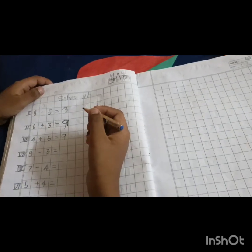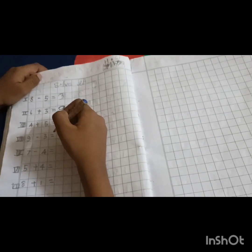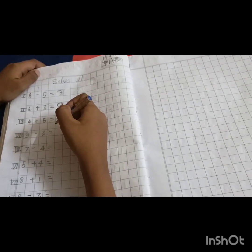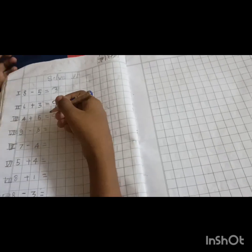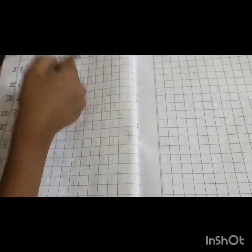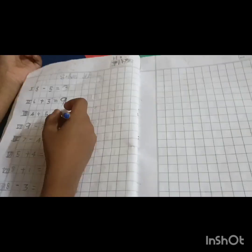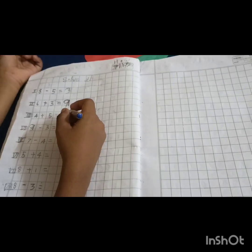Then the next one is subtraction. 9 minus 3. 9 in the mind. 9 in the mind, 3 in hands. Go, go, go, go. Talk. Start. Look at that. 9 in the mind? 3 in hands.